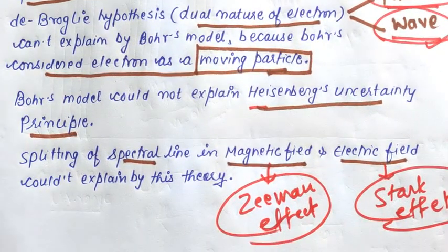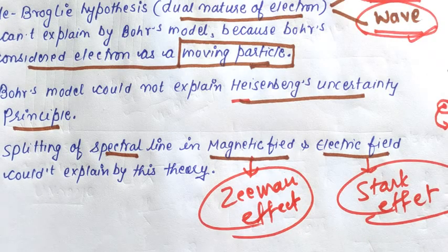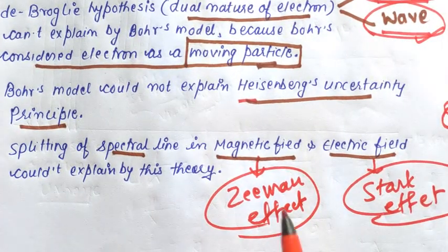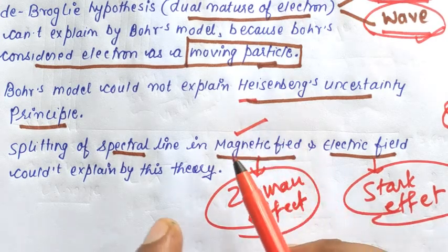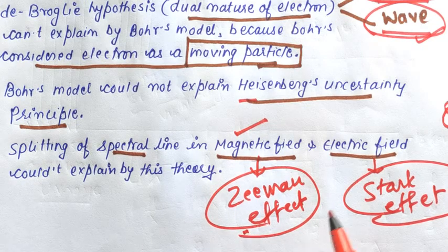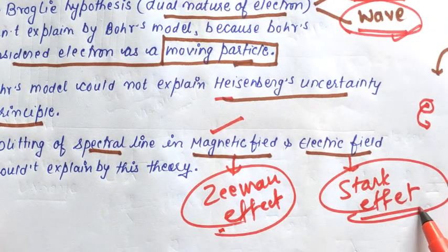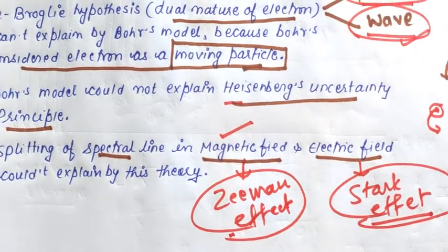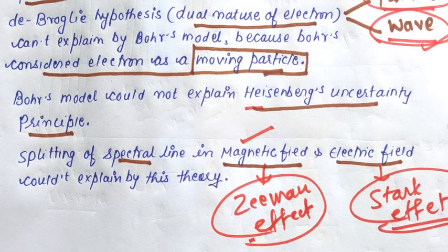The next limitation is the splitting of spectral lines in a magnetic field. When spectral lines split in the presence of a magnetic field, this effect is known as the Zeeman effect. When spectral lines split in the presence of an electric field, this is known as the Stark effect. These two effects cannot be explained by Bohr's atomic model, which is also a limitation.